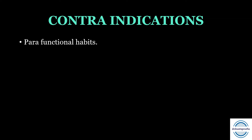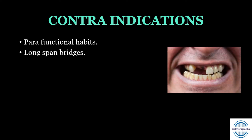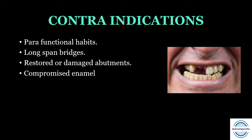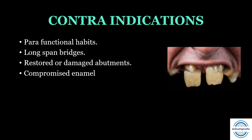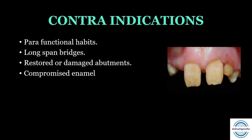Contraindications of resin bonded bridges: first, parafunctional habits — parafunctional forces will lead to failure of this bridge. Second, long edentulous span cases. Third, restored or damaged abutments — resin bonded bridges are not advocated here. Fourth, compromised enamel: since this bridge relies on bonding with enamel, conditions like enamel hypoplasia, amelogenesis imperfecta mean we will not go for resin bonded bridges.